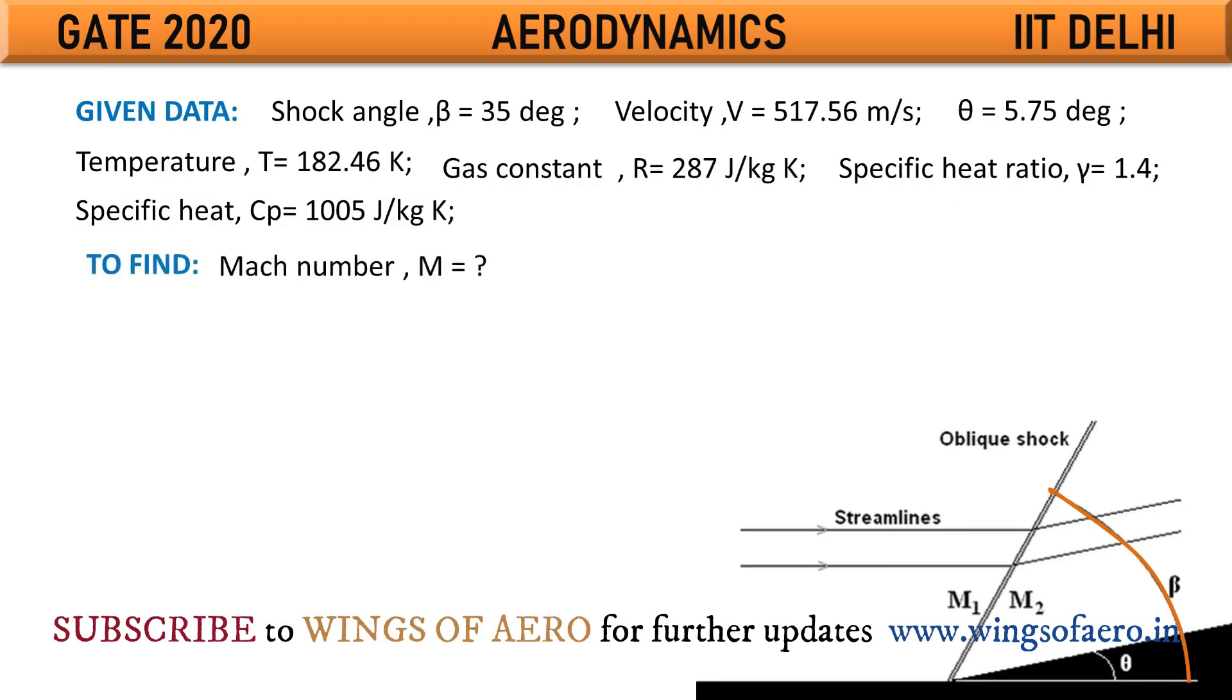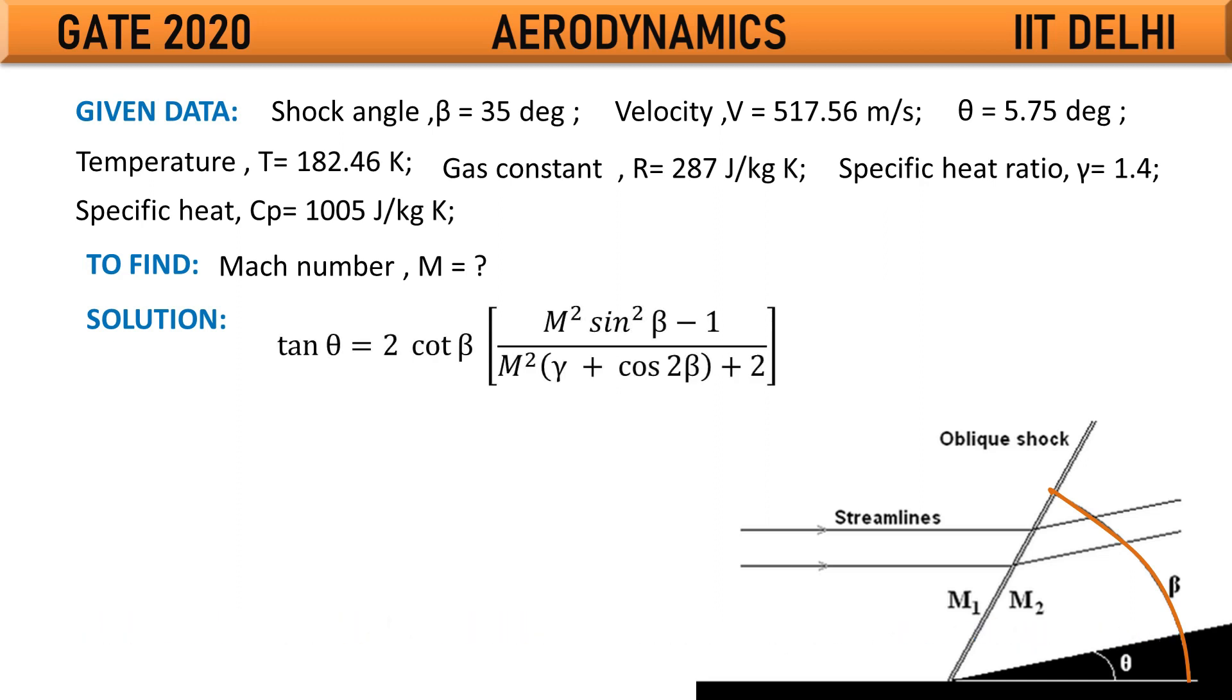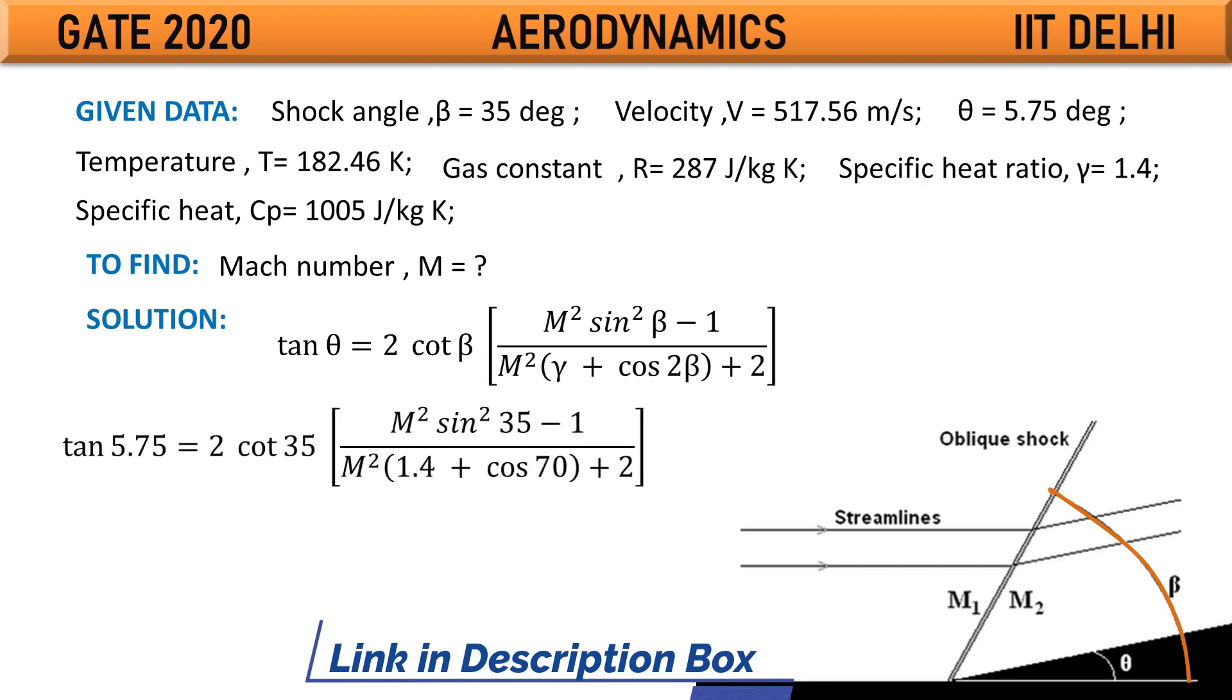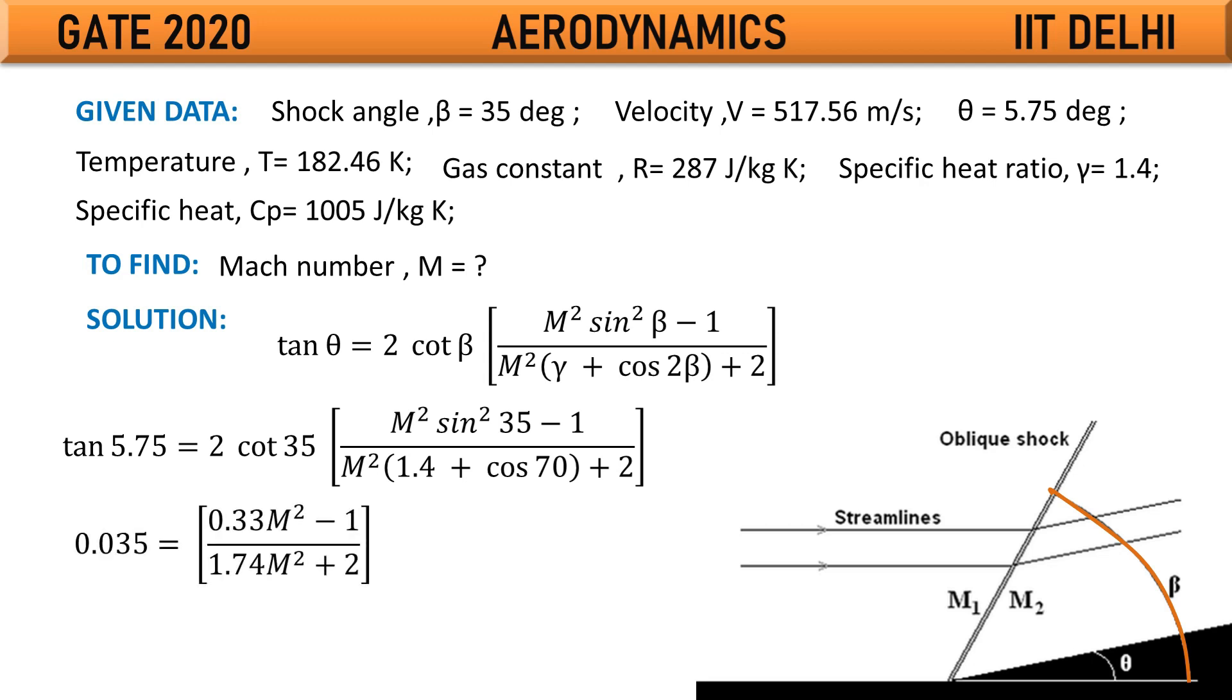What we need to find is the Mach number. We can simply recall the theta-beta Mach number relation: tan theta equals 2 cot beta times (M squared sine squared beta minus 1) divided by (M squared times (gamma plus cos 2 beta) plus 2). By simply substituting the values of theta and beta, we can simplify this in terms of Mach number.